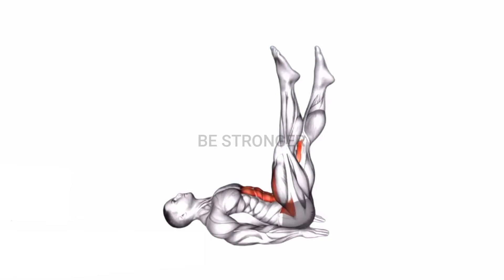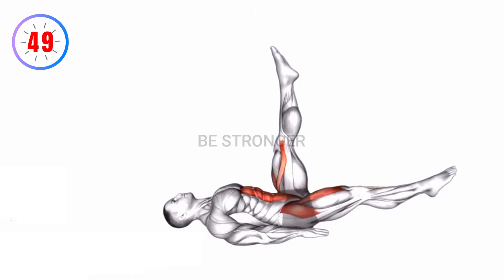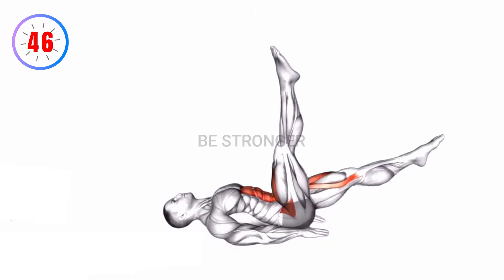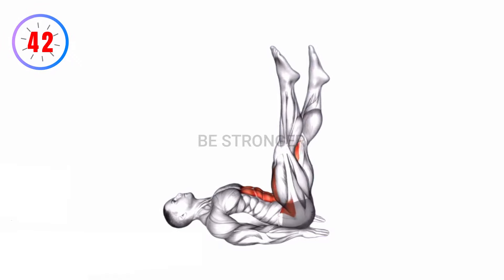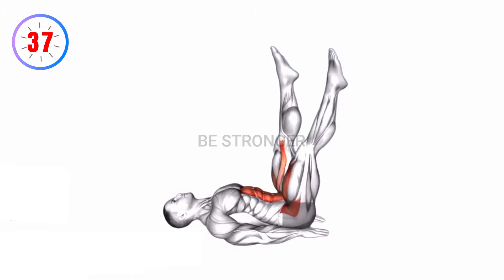Exercise number 5, single leg raises. Lie on your back with your hands under your hips and legs extended. Lift one leg towards the ceiling, keeping it straight, and then lower it back down without touching the ground. Alternate between legs.